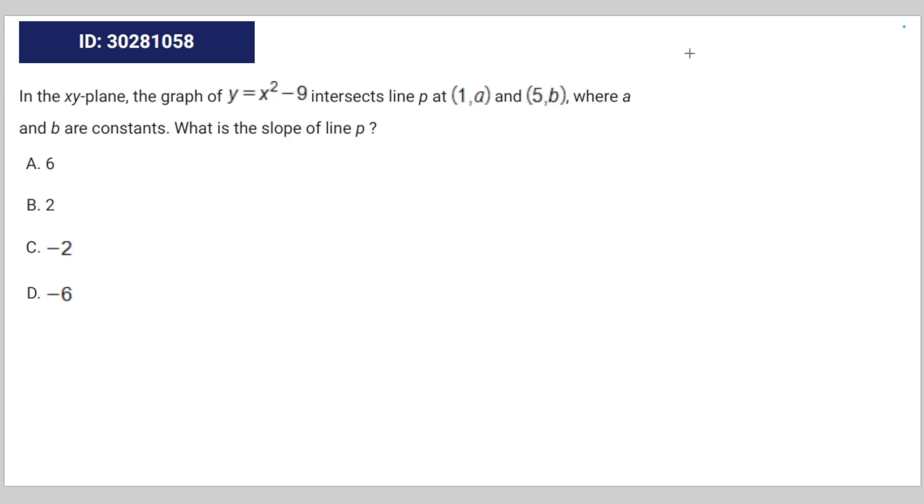The slope of any line is equal to the y values minus each other over the x values minus each other. In terms of this situation, it's going to be b minus a over 5 minus 1, which is 4.